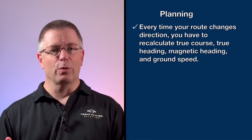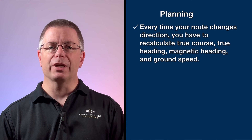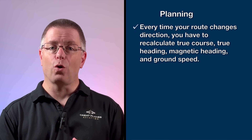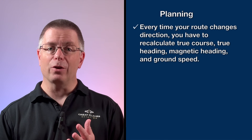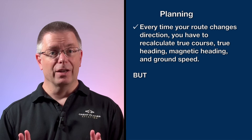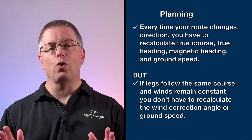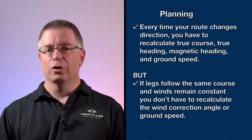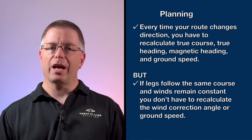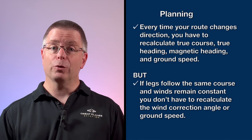Another benefit of straight-line routing is in the planning phase, especially if you're planning by hand. Every time your route changes direction, you have to recalculate your true course, your true heading, your magnetic heading, and your ground speed. But if your legs follow the same true course and the winds remain the same, you don't have to recalculate the wind correction angle or the ground speed.